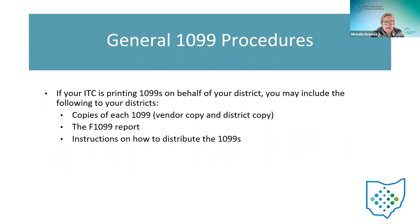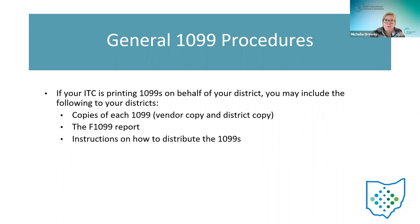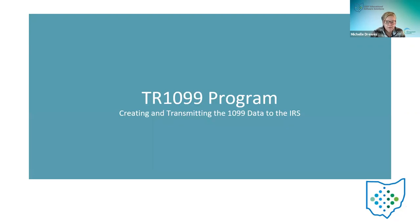If your ITC is printing 1099s for Classic districts, you'll include the pressure-sealed 1099 copies, and you can print two 1099s per sheet so districts have copies. You'll also include the 1099 report text file and instructions on distributing 1099s to vendors. You probably have your own step-by-step procedures for that. Once 1099s are generated and you're closed for the year and districts have moved into January, the next step is the TR 1099 program.